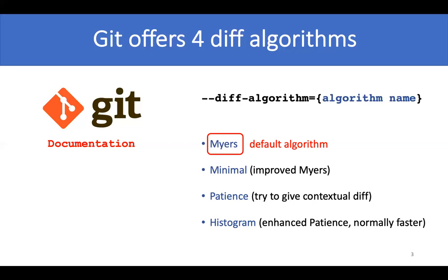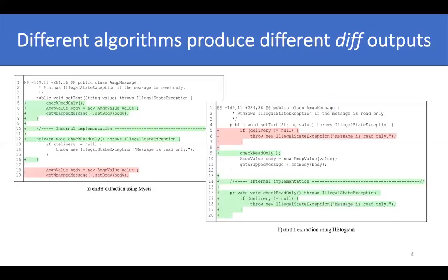However, the problem is that the diff outputs are sometimes different due to different diff algorithms. Different diff algorithms might identify different change hunks — that is, a list of program statements deleted or edited continuously, separated by at least one line of unchanged context.